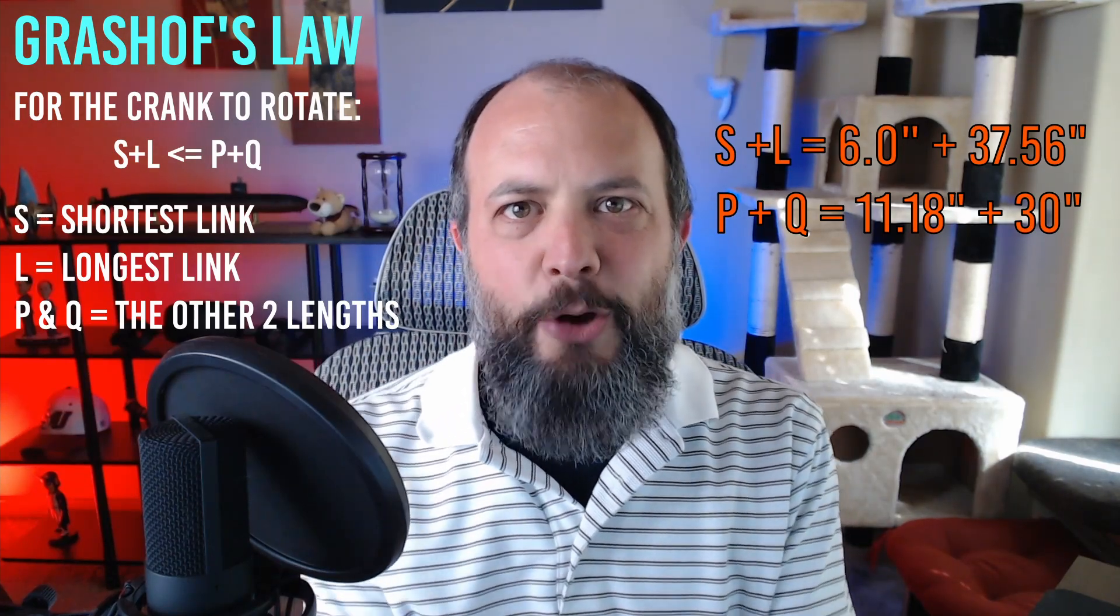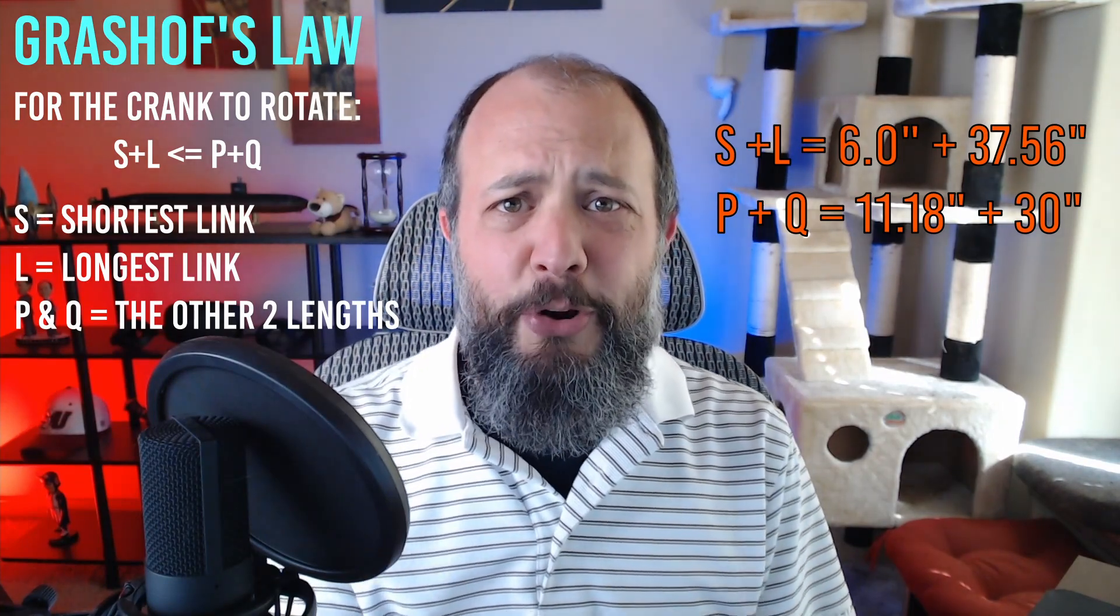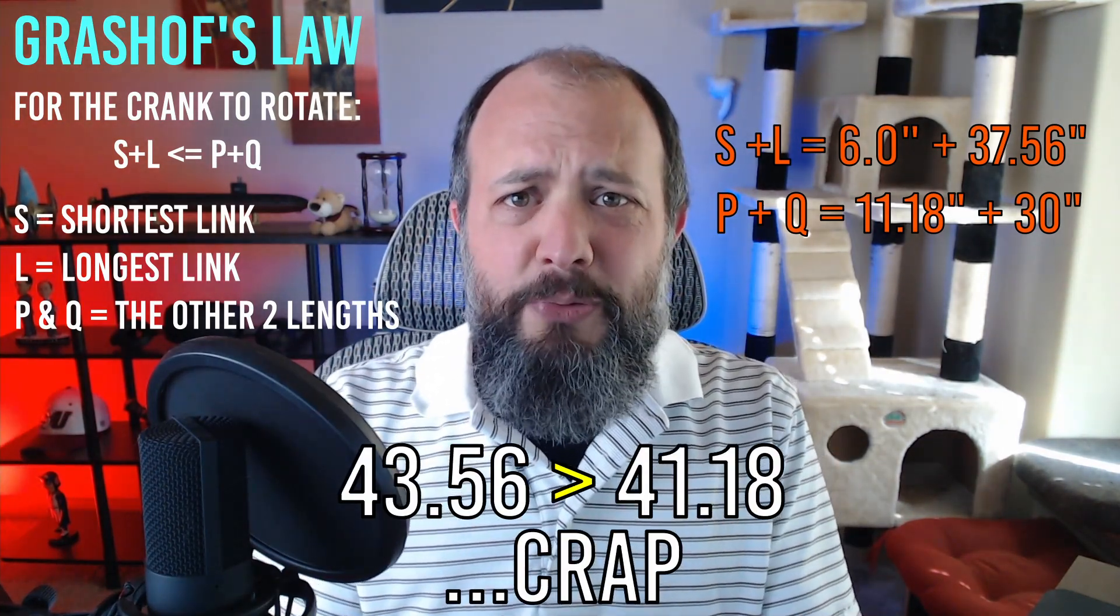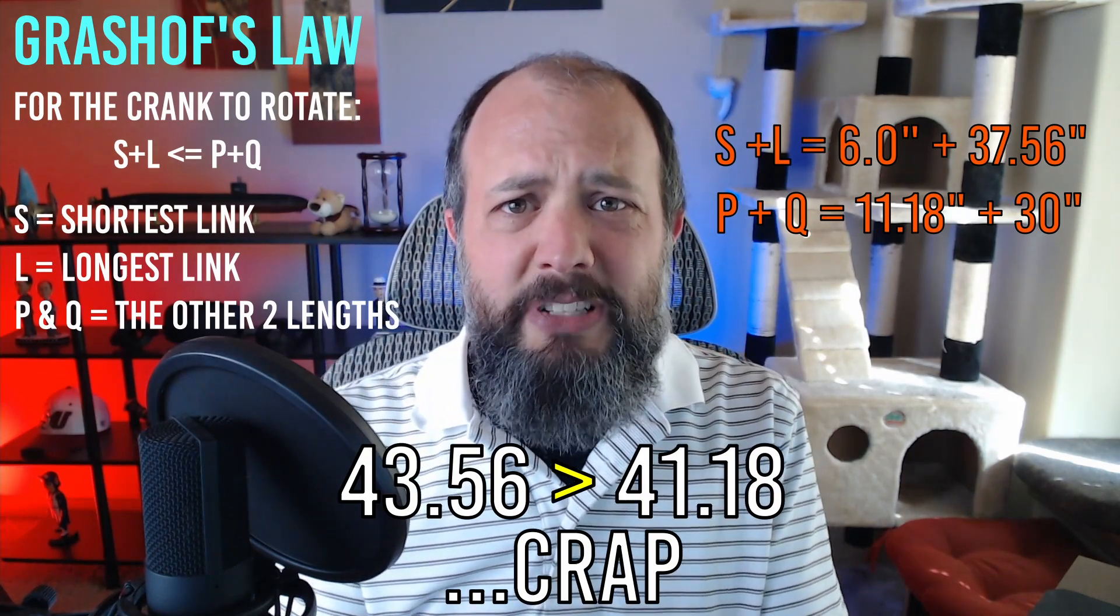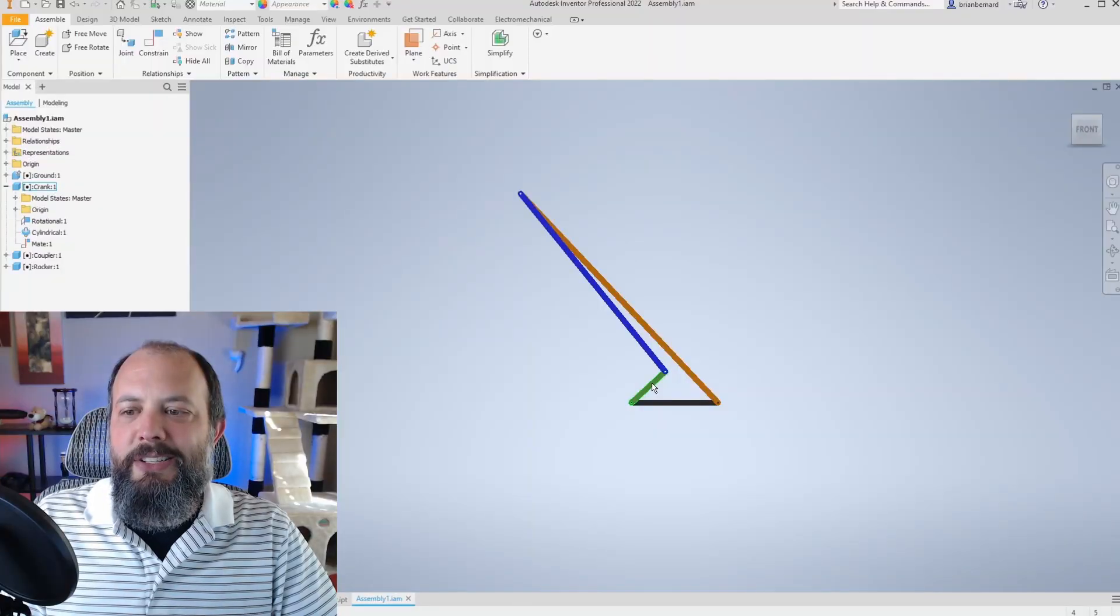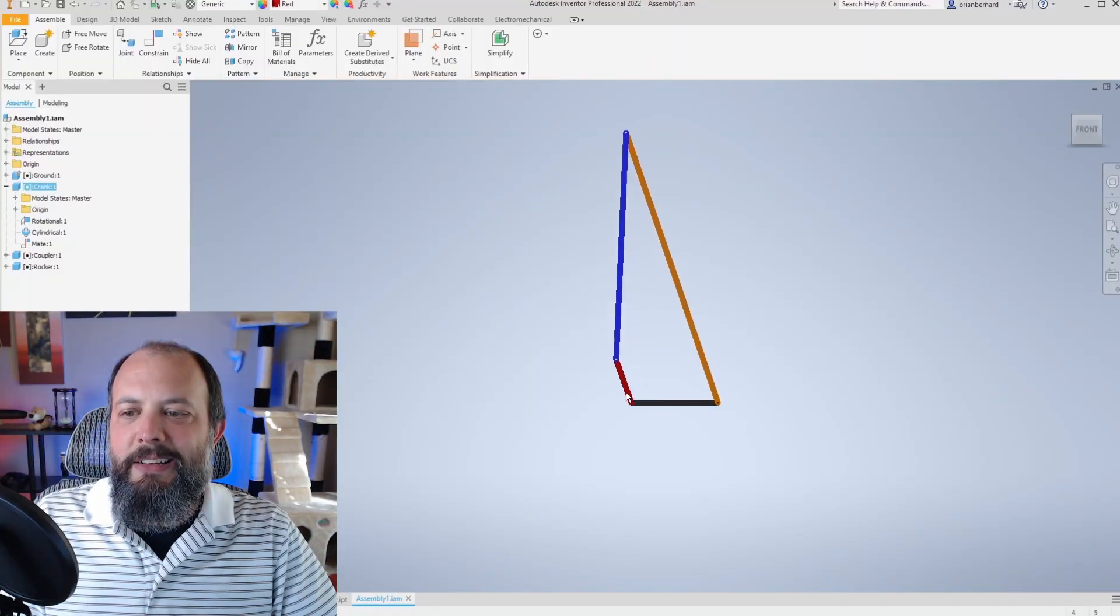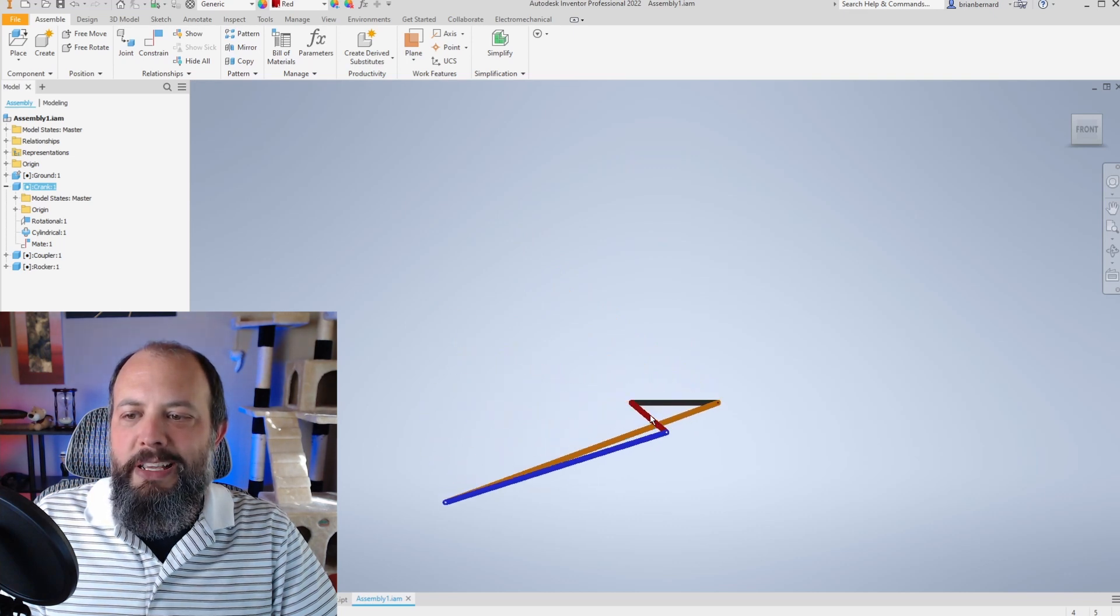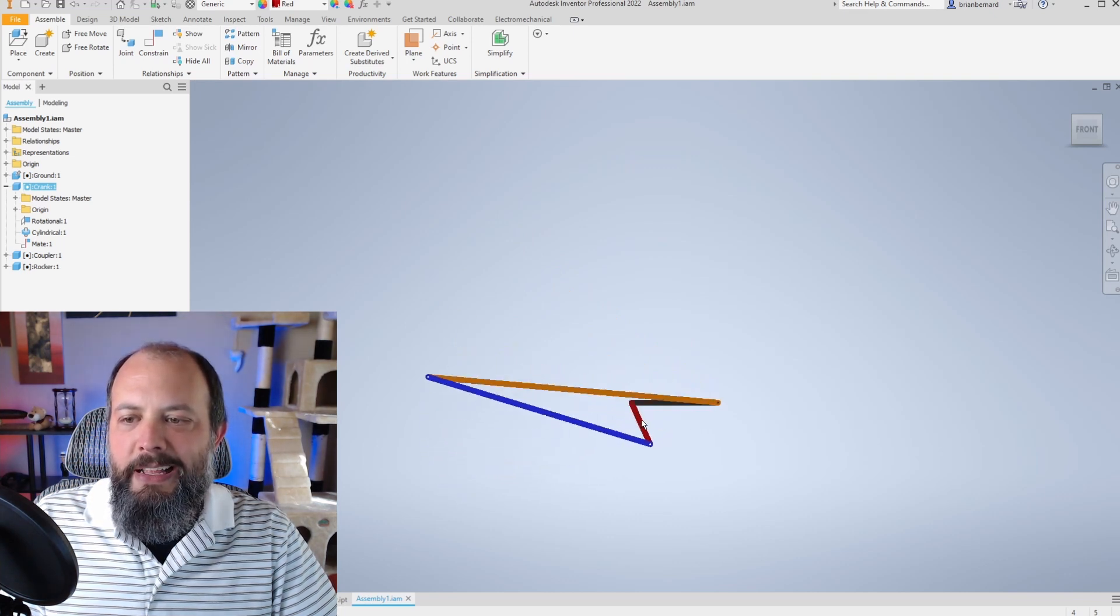But the inequality is in the wrong direction, so none of these pieces will actually rotate and what I've designed is actually a double rocker. That's not going to work for a hand car at all. And modeling the system here in Inventor, you can see this red crank can't rotate a complete rotation. Once the coupler and rocker are aligned, it's stuck.